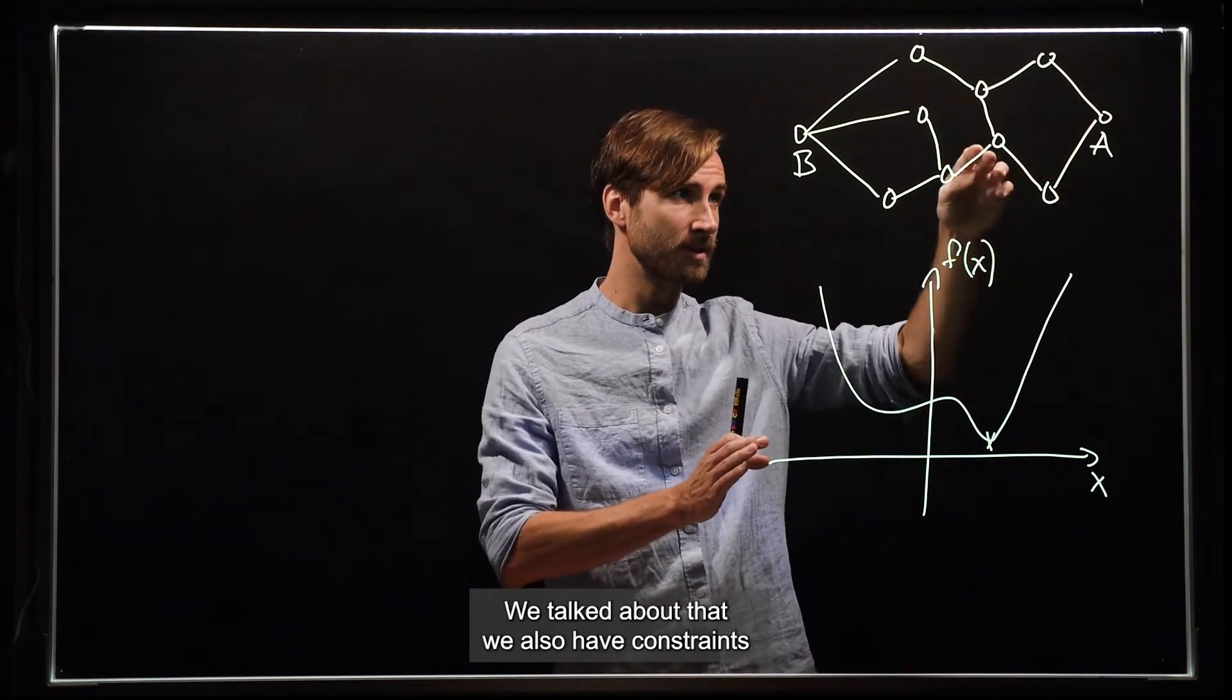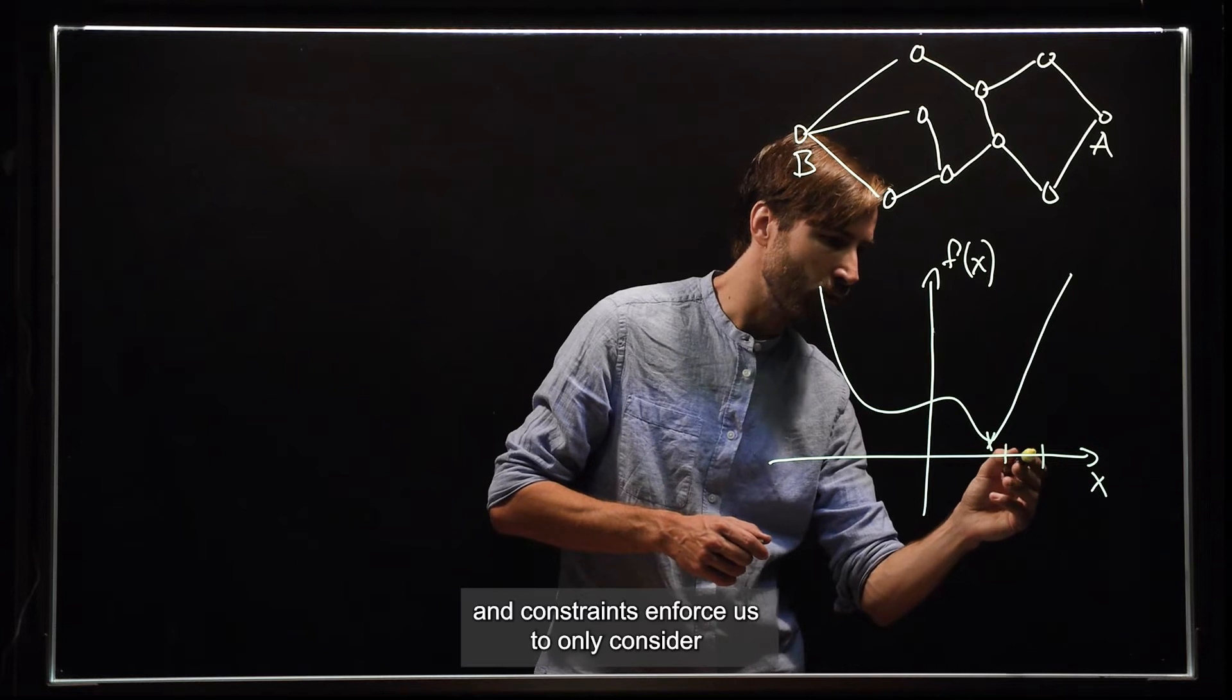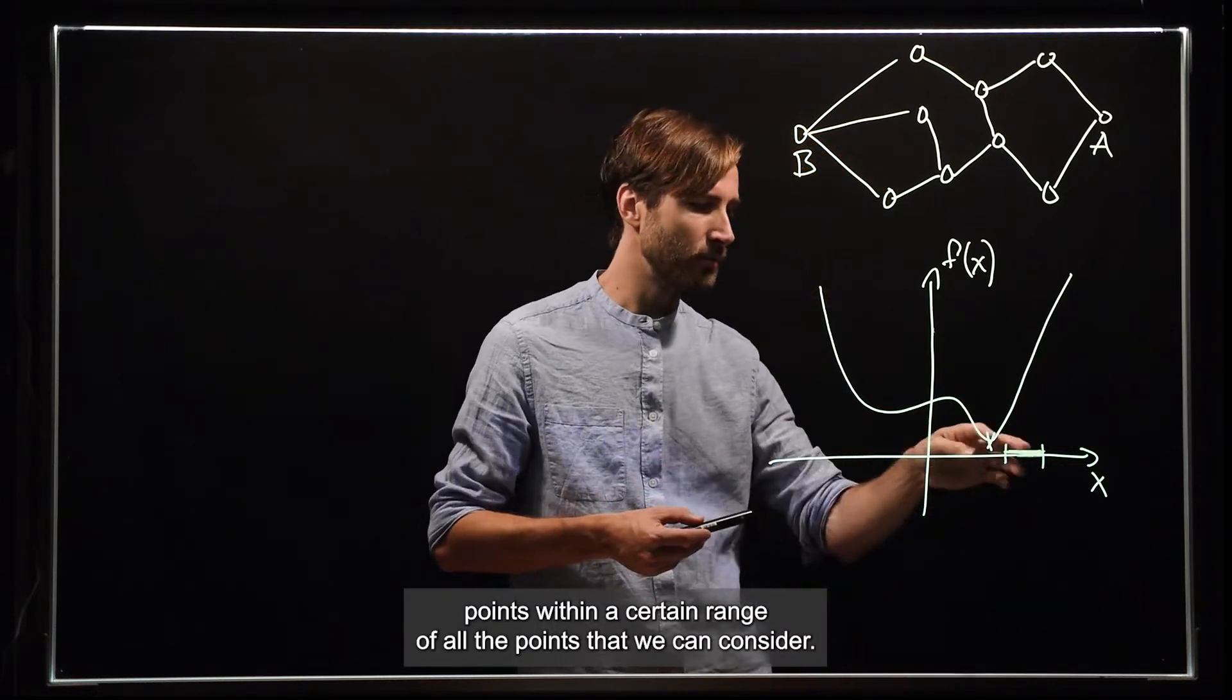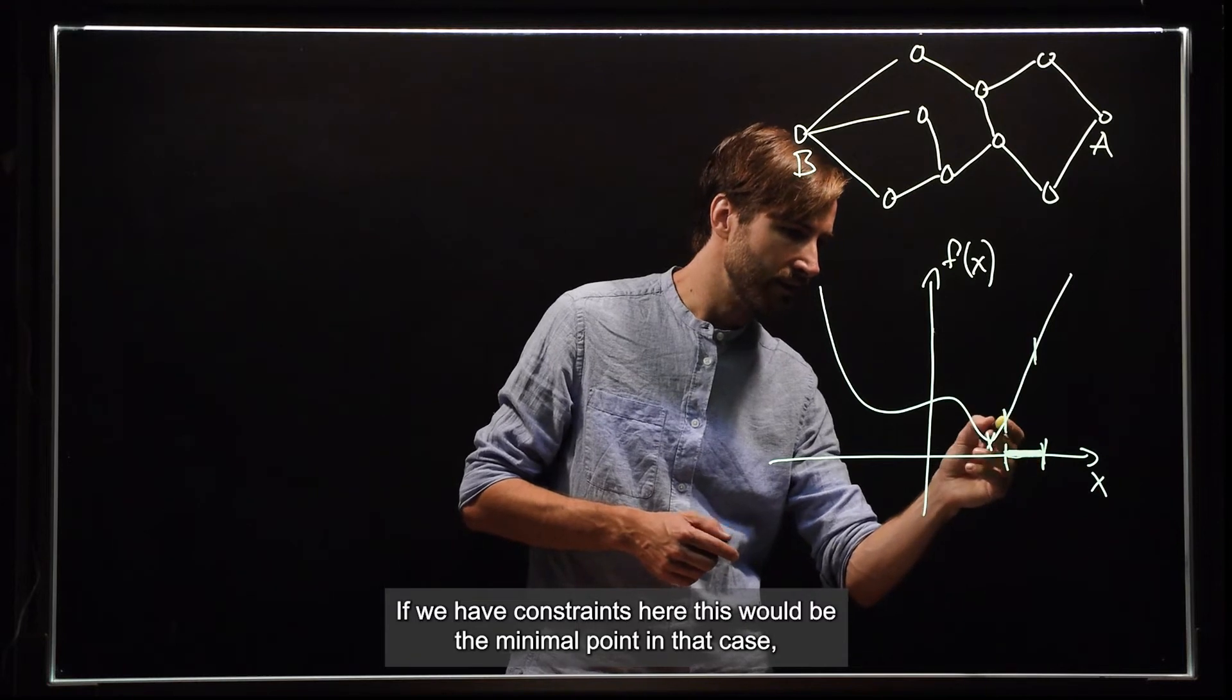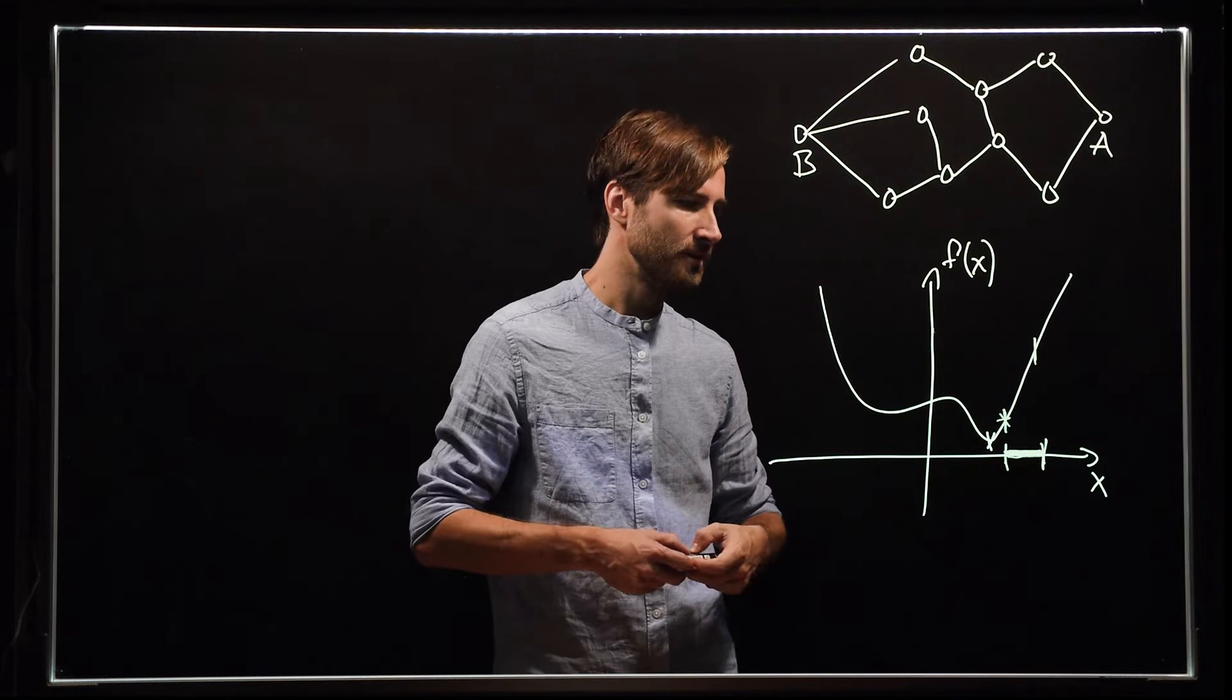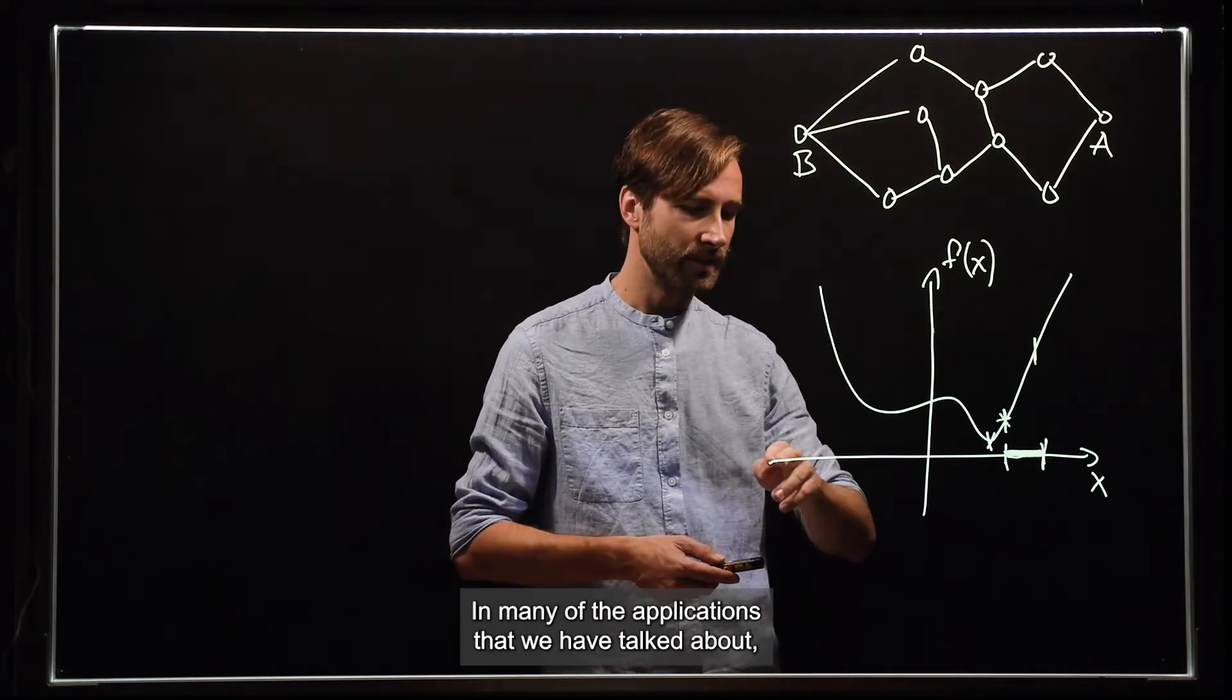We talked about that we also have constraints. And constraints enforce us to only consider points within a certain range of all the points that we can consider. If we have constraints here, this will be the minimal point in that case, which again will give us the best way to go from A to B in the GPS example.